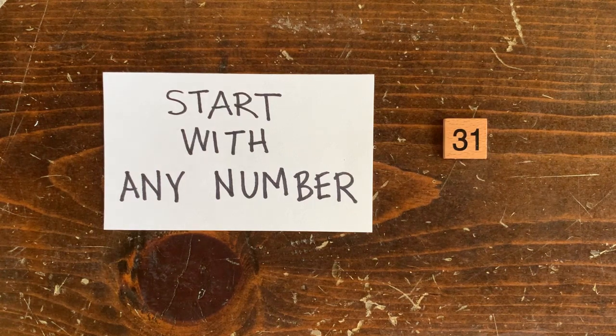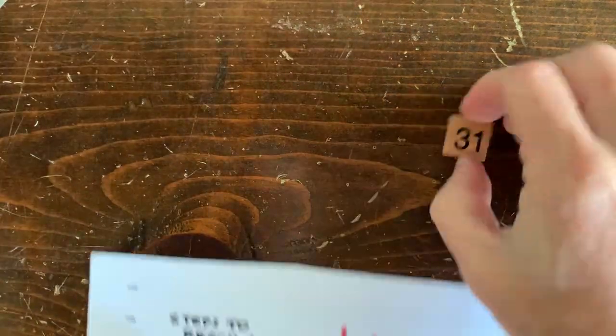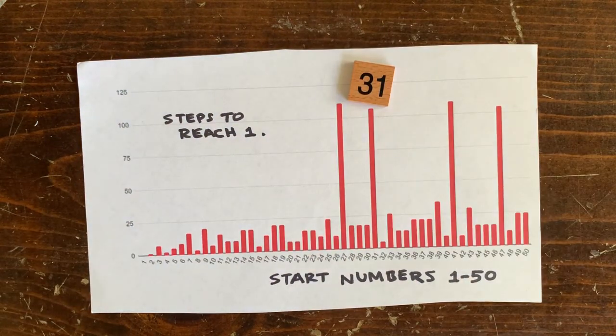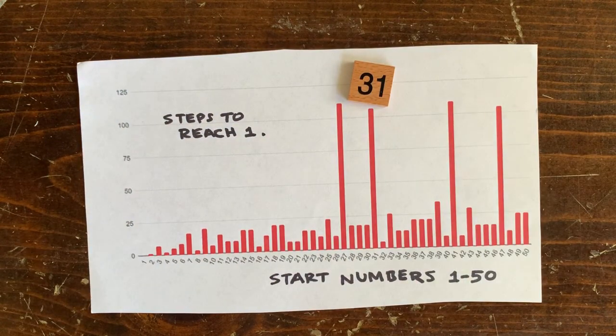Welcome to episode 31. When you put 31 into the 3n plus 1 procedure, it goes all the way up to 9000 before eventually coming back down to 1.